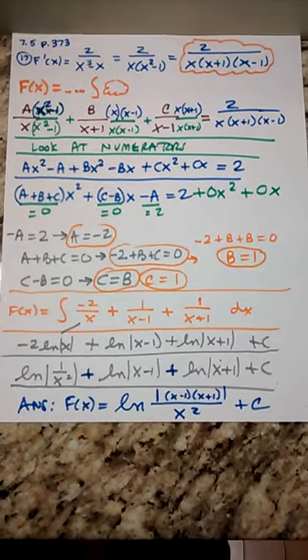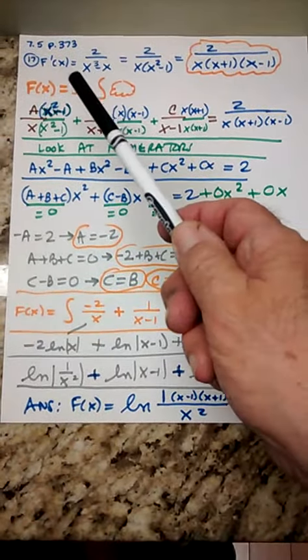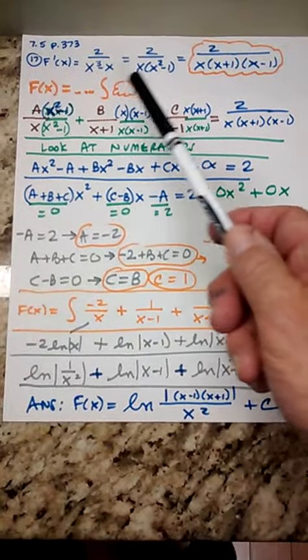Just a real quick rundown on number 17. They want the function, they gave you the derivative.